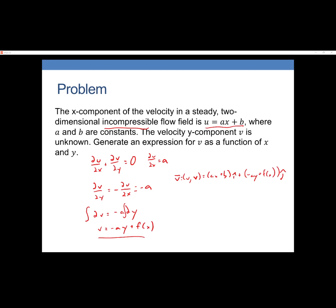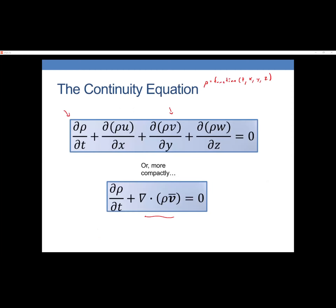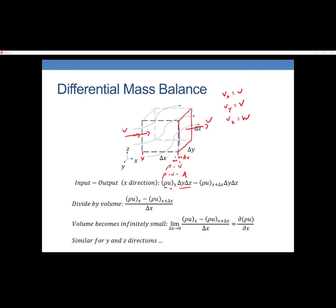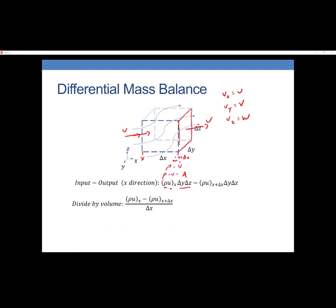A student asked about the derivation of the continuity equation: why do we divide by volume? We divide by volume because we're finding the mass inside that volume, and then that volume is going to shrink to zero. What we're finding is the mass per that volume — the density. Then we shrink the volume down to nothing. That is why you divide by the volume: you are finding the change of mass inside that volume as it shrinks to just a point.